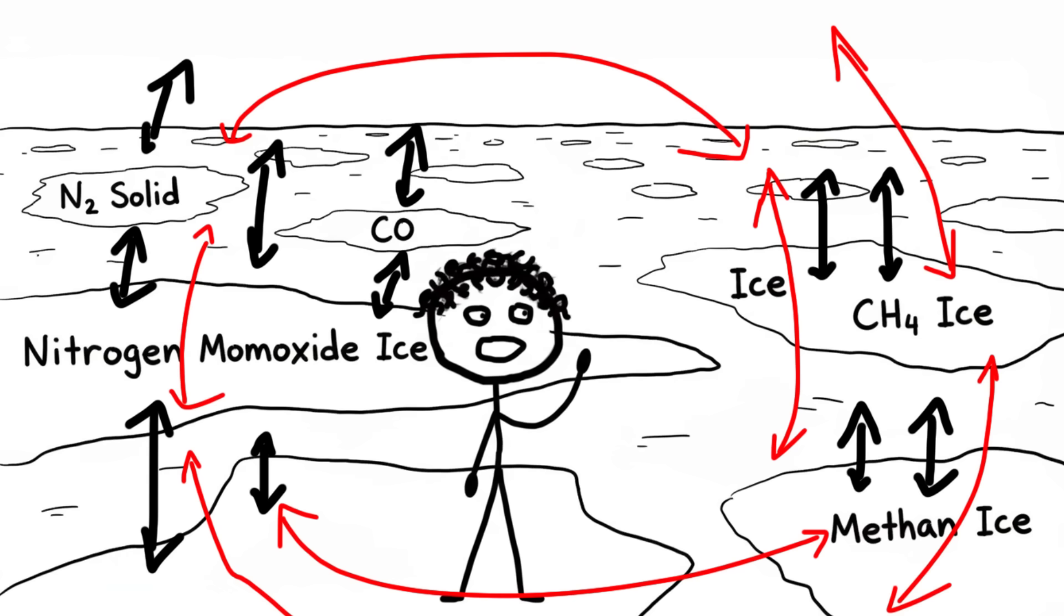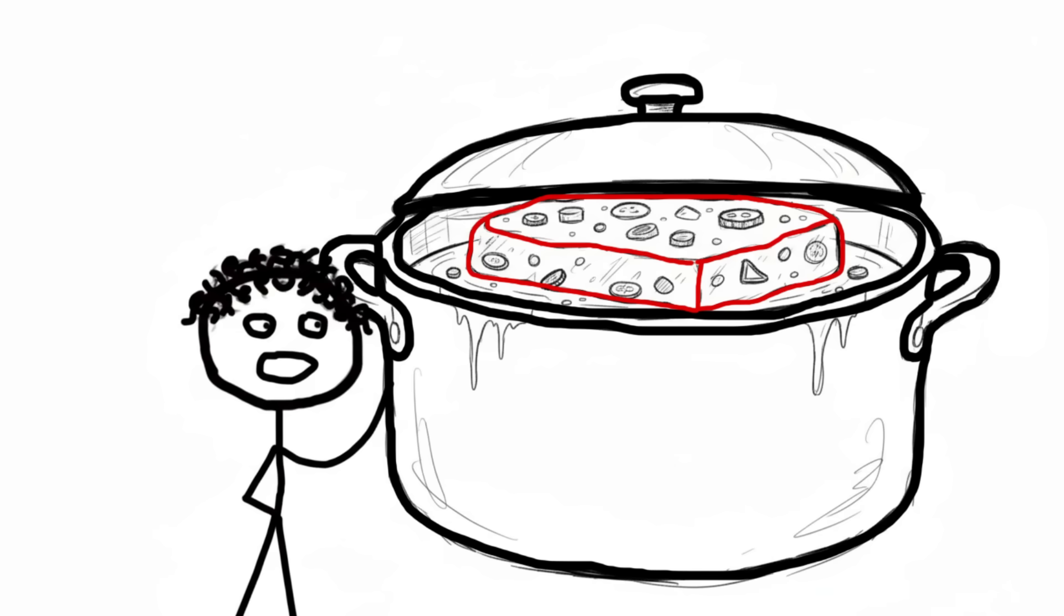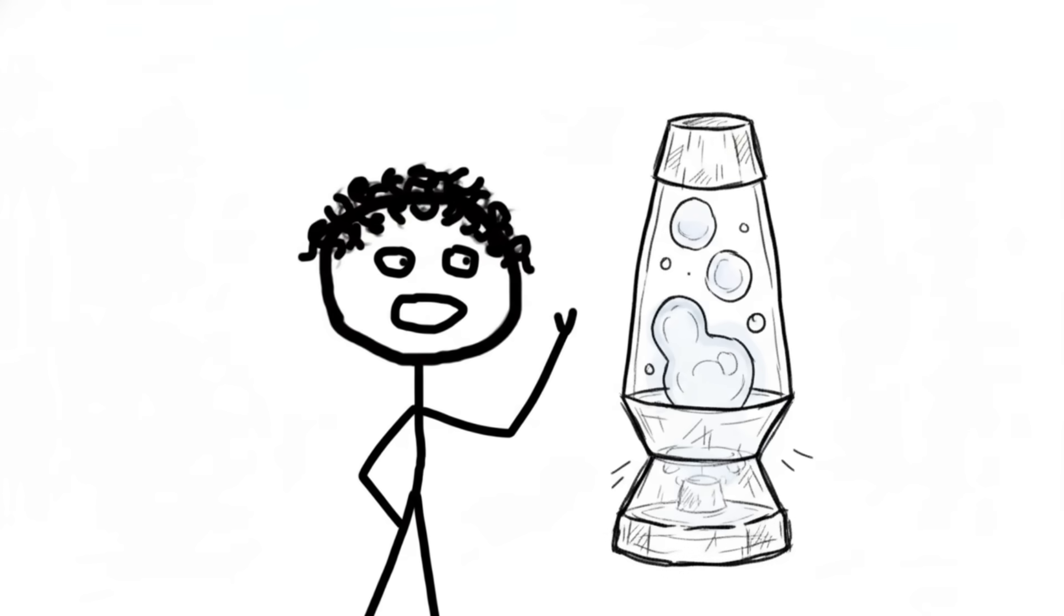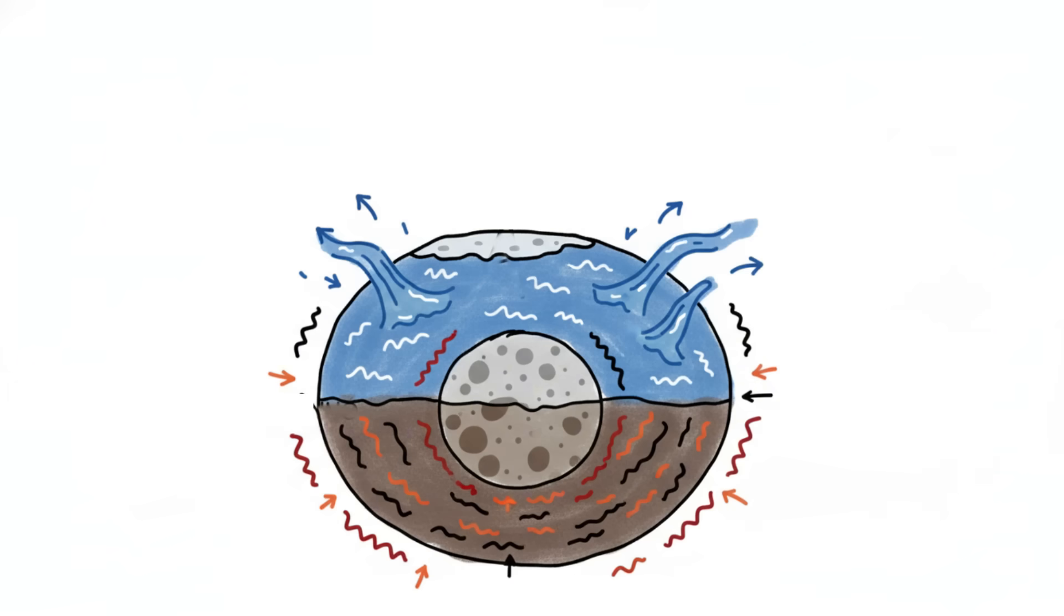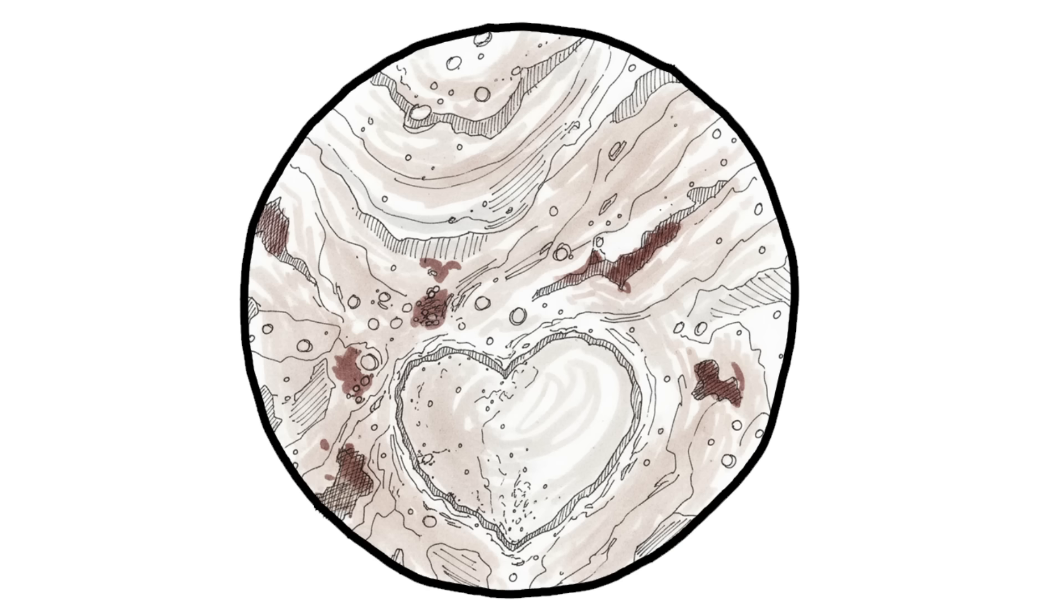The crazy part? This ice sheet is constantly convecting. It's churning, flowing, and turning over like a giant pot of frozen stew, or more accurately, like a lava lamp made of nitrogen ice. This is driven by trace amounts of heat coming from Pluto's rocky core, which is enough to keep the nitrogen ice soft and flowing, constantly erasing impact craters and completely resurfacing that entire region every few hundred thousand years.